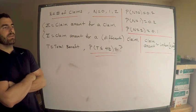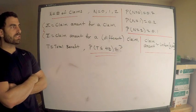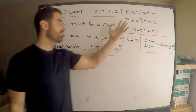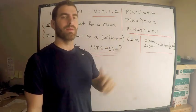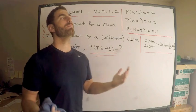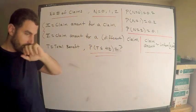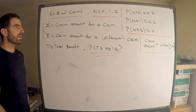We have n is given to be the number of claims. And based on the question, they tell me that the probability that there are zero claims is 0.7, probability there's 1 is 0.2, and probability there's 2 is 0.1, implying basically that n can be 0, 1, or 2. So it is a discrete random variable. And those are the values.